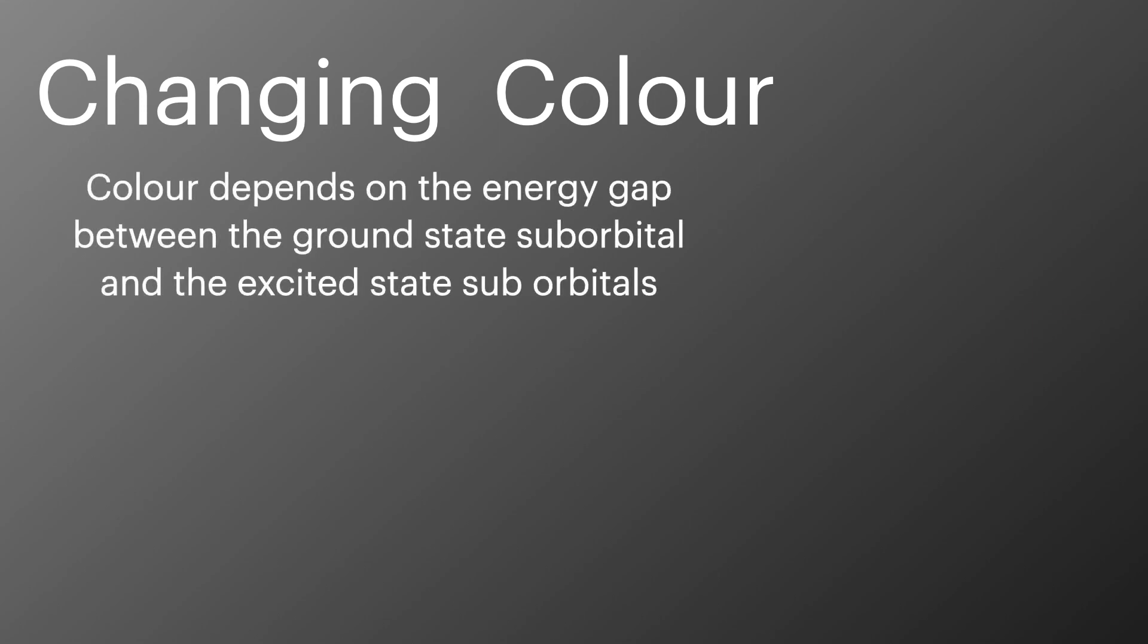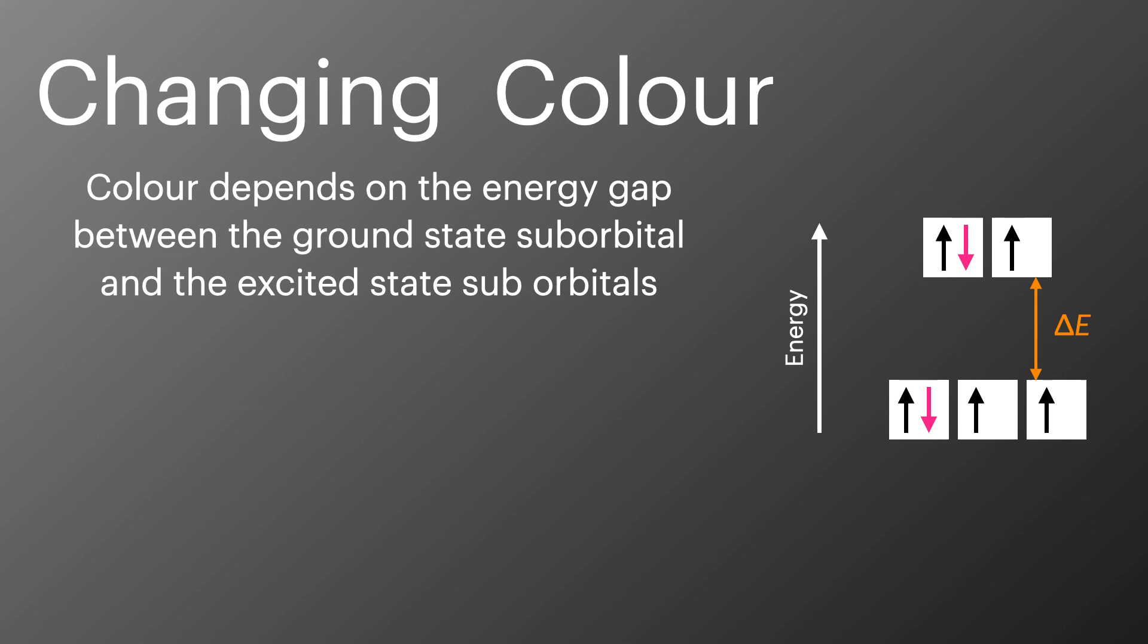The color of a complex depends on the size of the energy gap between the ground state electrons and the excited state electrons. This is influenced by four things: the type of ligand, the coordination number around the metal ion, the oxidation state of the metal ion, and the type of metal ion itself. You should always be careful giving the metal ion as a reason in an exam question, as it's often looking for answers about a change to the complex, not an entirely different complex with a different transition metal ion.